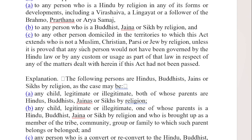Those people who are Hindu, Buddhist, Jain, or Sikh by religion shall be considered Hindu under this act. Now, who are excluded? Muslim, Christian, Parsi, and Jew. Under the third clause, any person domiciled in the territory who is not a Muslim, not a Christian, not a Parsi, and not a Jew by religion shall be considered Hindu.